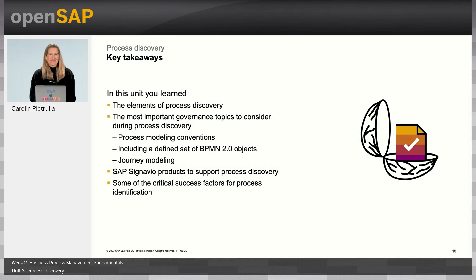Let me wrap up session three by summarizing our key takeaways. Process discovery is essentially the gathering of process models in an organization. We covered the most common approaches to discover processes: performing interviews, workshops, and the collection of evidence. We talked about process modeling and the most important governance topics in this phase. We briefly discussed journey modeling and which Signavio Suite products can best support process discovery activities. Finally, we looked at SAP's Golden Standard and the 4D process modeling approach. Thank you for your attention, and I look forward to welcoming you to the next unit on process analysis.